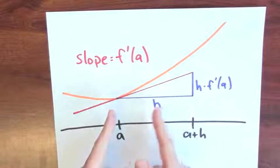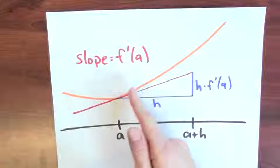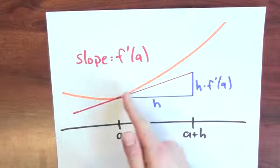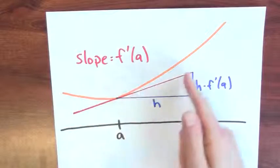Now, if I made h really, really small, I'd be doing an even better job of staying close to the graph of the function when I follow the tangent line.